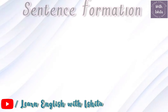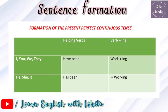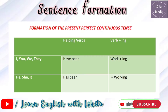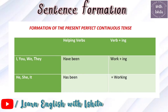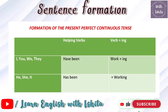Now let's talk about the formation of the present perfect continuous tense. Look at the chart on the screen. For 'I,' 'we,' 'you,' and 'they,' the auxiliary is 'have been,' followed by a verb plus '-ing.' For 'he,' 'she,' and 'it,' the auxiliary is 'has been,' followed by a verb plus '-ing.'